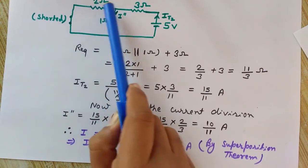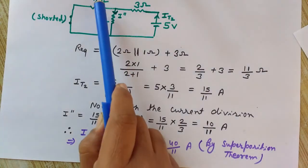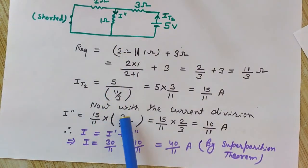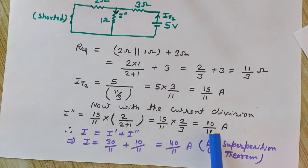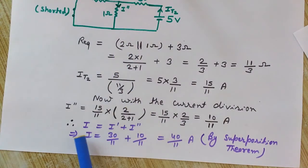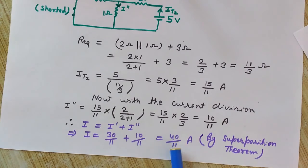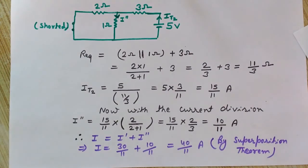Using current division for i'': it2 = 15/11 A divides into the 2 ohm and 1 ohm branches. The current i'' in the 1 ohm branch equals (15/11) × 2/(2+1) = (15/11) × (2/3) = 10/11 amperes. Now applying superposition, the net current is i = i' + i'' = 30/11 + 10/11 = 40/11 amperes. This is the result obtained using the superposition theorem.